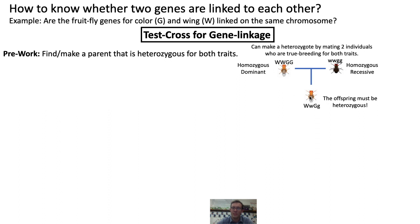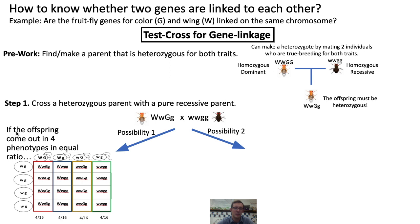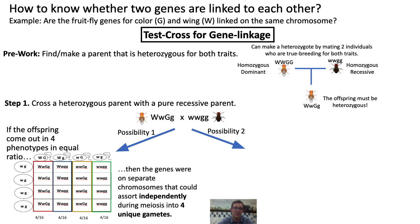Once you have a heterozygous parent available, in order to do a test cross, the only thing you need to do is cross that heterozygous parent with a pure recessive parent — that is, get them to have offspring. And once that happens, one of two things will occur. The first possibility is that the offspring come out in four phenotypes of equal ratio. If that occurs, then we know that the genes must have been on separate chromosomes, able to sort independently during meiosis to produce four unique gametes.